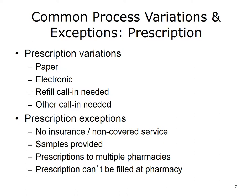The common variations on the prescription process include paper prescriptions provided during the office visit, electronic prescriptions provided during the office visit, a refill call-in prescription needed, and other call-in prescription needed. For example, a patient on an antibiotic is out of town and not getting better, calls their provider, and asks for a different prescription. Common exceptions or errors that can occur during a prescription process include no insurance or a non-covered service, samples provided, prescriptions need to be sent to multiple pharmacies, and the prescription can't be filled at a pharmacy.